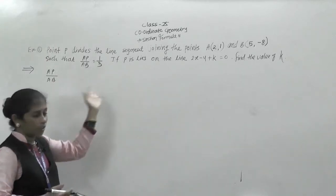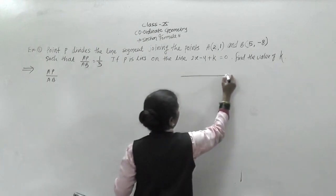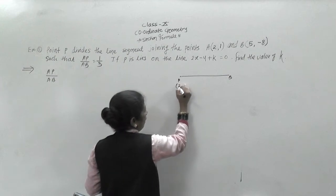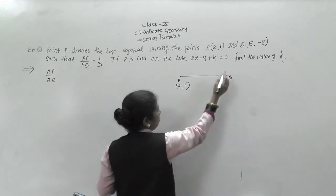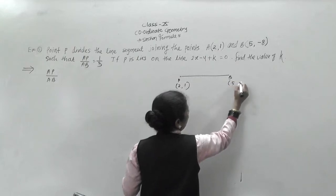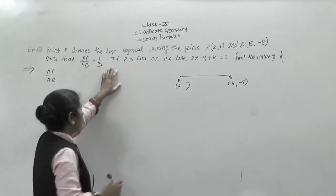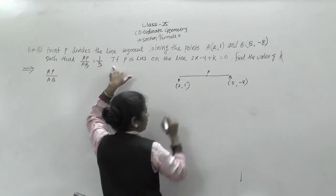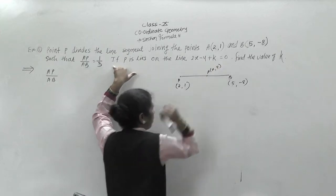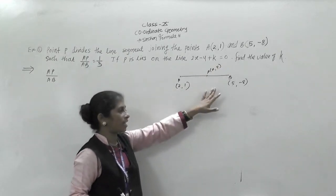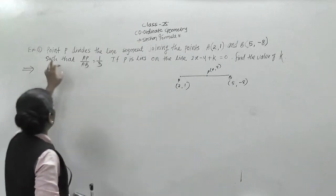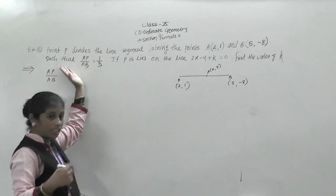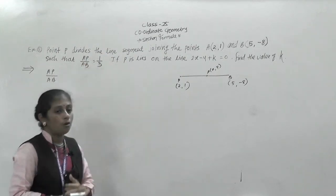Now we will see. According to the example, we will draw the figure here. This is the line segment AB. The coordinates of A are (2, 1) and B are (5, -8). P is the point on the line segment — we take the coordinates of point P as X comma Y. Point P divides the line segment such that AP by AB equals 1 by 3.